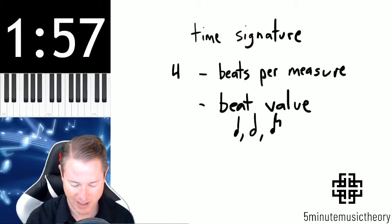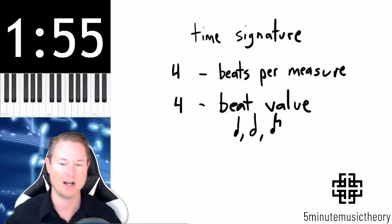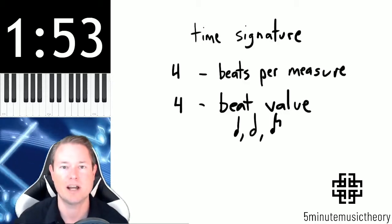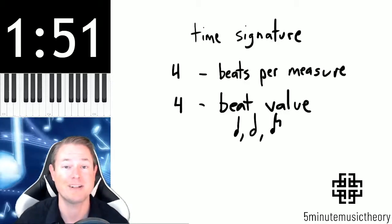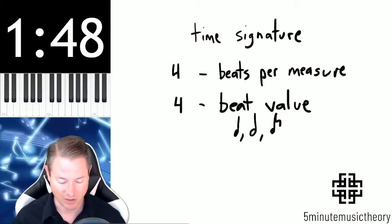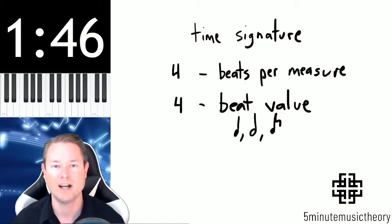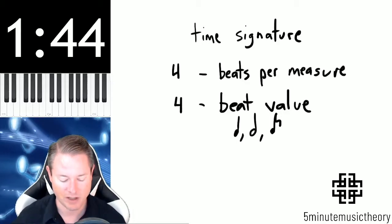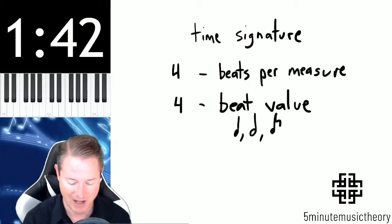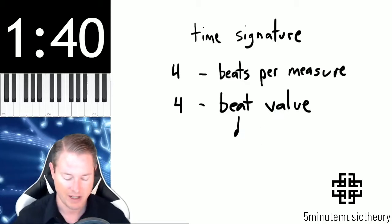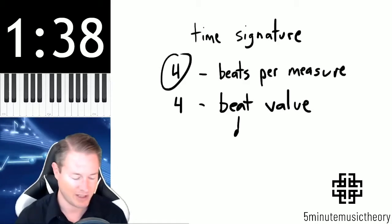If I write a four on top and a four on bottom, that's a very common time signature. Actually, it specifically is known as common time because it happens so commonly. And in four four time there are four beats per measure and each one of those beat values is a quarter note.